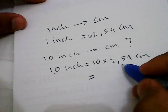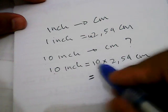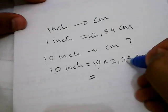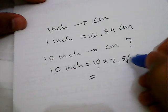10. Because we have one zero here, we need to move the comma one digit, so we